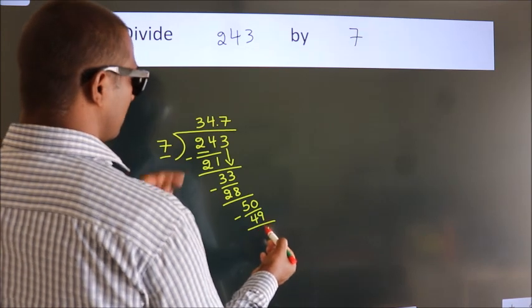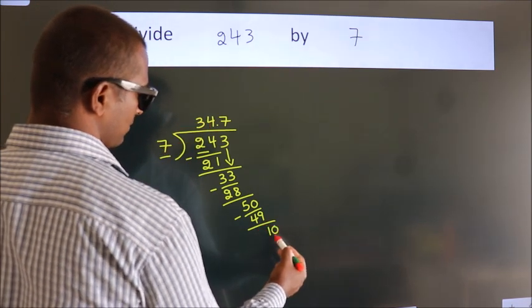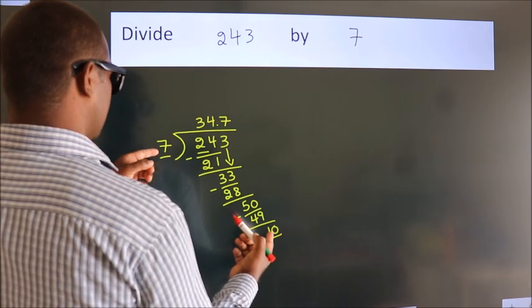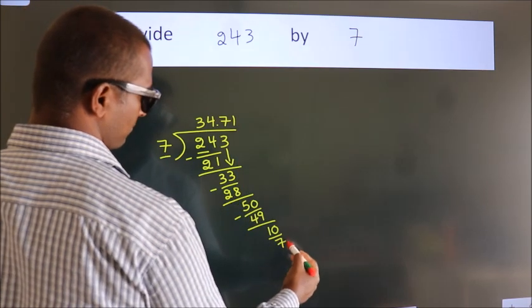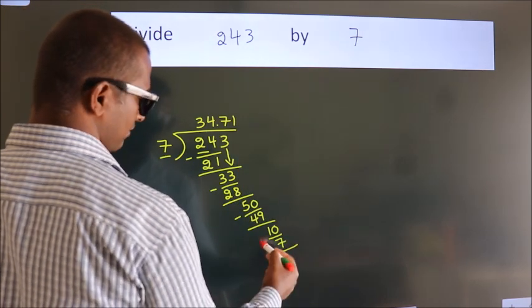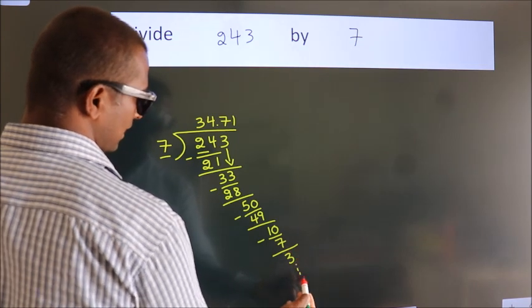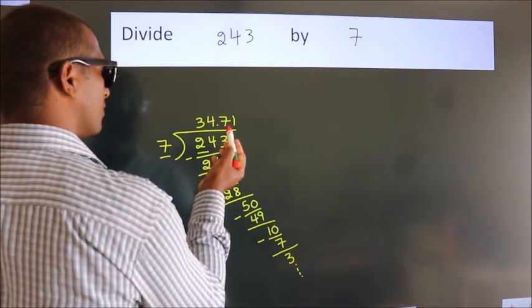After this, we already have the decimal, so directly take 0. So 10. A number close to 10 in the 7 table is 7 ones, 7. Now we subtract. We get 3, and the division continues. It is enough if we do up to 2 decimal places.